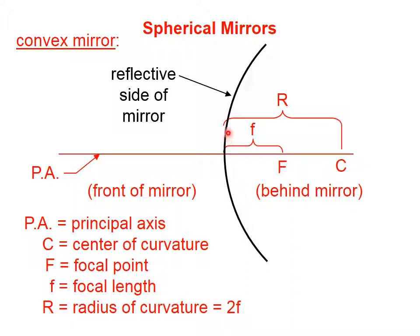The center of curvature is behind a convex mirror for the simple reason that if this mirror were a complete sphere, it's only a portion of a sphere, but if it were a complete sphere, clearly the center would have to be over here, on the right.